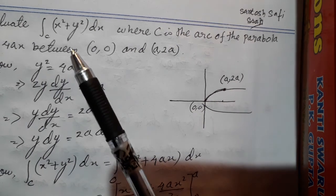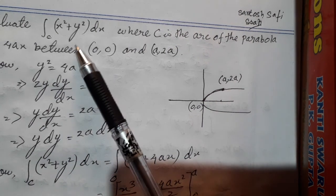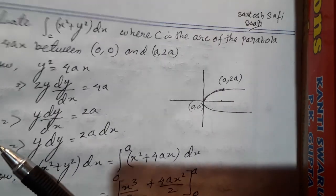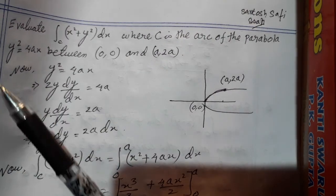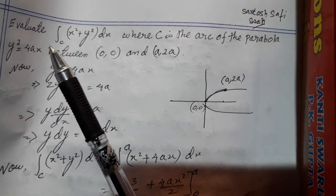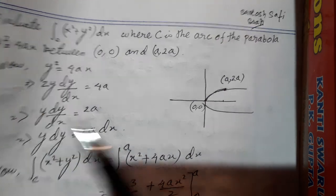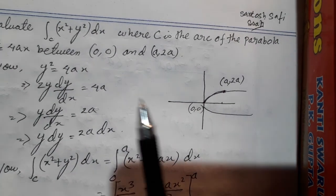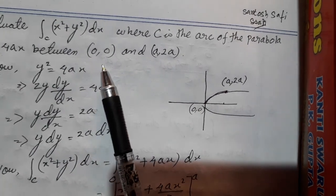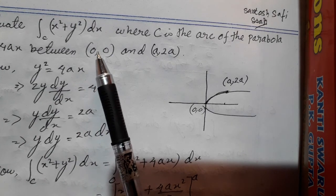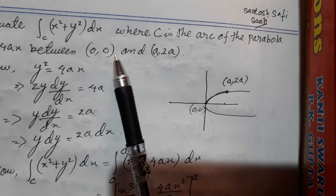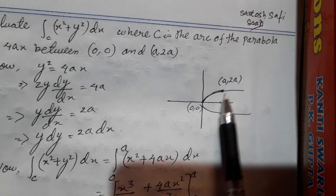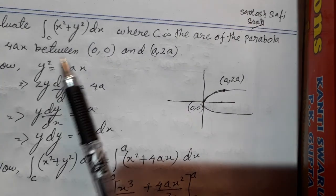In this video, I'm going to explain how to integrate along the parabola. They are giving you the parabola here. If you can see, the parabola is y squared equal to 4ax. I'm drawing a parabola y squared equal to 4ax, and the limit we are trying to integrate along the curve is from (0,0) to (8,8). Along this curve, I'm trying to integrate this function.